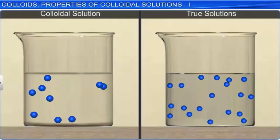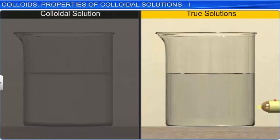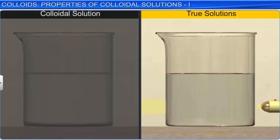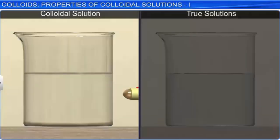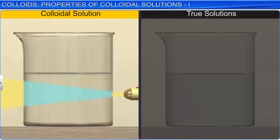One property of colloids that distinguishes them from true solutions is the Tyndall effect. When a beam of light passes through a true solution, there is no scattering and the path of light cannot be traced. The solution appears clear if observed in the direction of light, and perfectly dark if observed from a direction perpendicular to the direction of light. On the other hand, when a beam of light is allowed to pass through a colloid, it gets scattered by the colloidal particles and the path of the light can be traced. The path of light gets illuminated with a bluish light. This phenomenon of scattering of light by colloidal particles is called the Tyndall effect, and the illuminated bright cone of light is called the Tyndall cone.